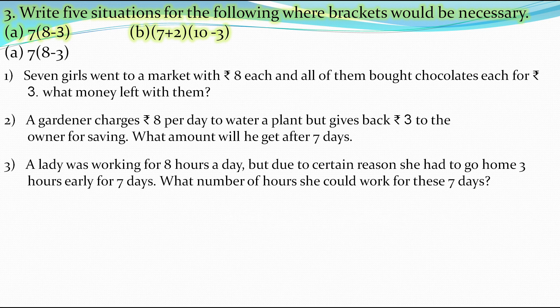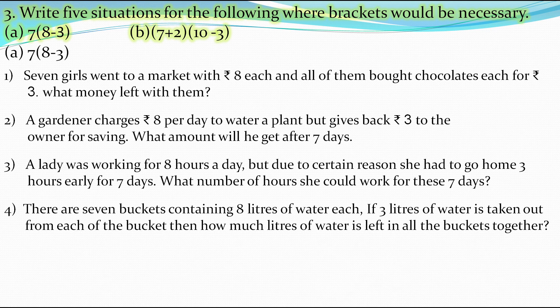The fourth situation: there are 7 buckets containing 8 liters of water each. If 3 liters of water is taken out from each bucket, we subtract 3 from 8. How many liters of water are left in all the buckets together? We multiply with 7, and for that we enclose 8 minus 3 in a bracket, giving 7×(8−3).